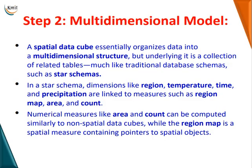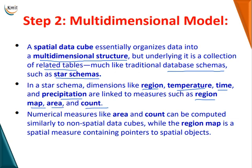Multidimensional model: the spatial data cube organizes data into a multidimensional structure, but underlying it is a collection of related tables, much like a traditional star schema. Dimensions like region, temperature, time, and precipitation are linked to measures such as region map, area, and count. Numerical measures like area and count can be computed similarly to non-spatial data cubes, while the region map is a spatial measure containing pointers to spatial objects.